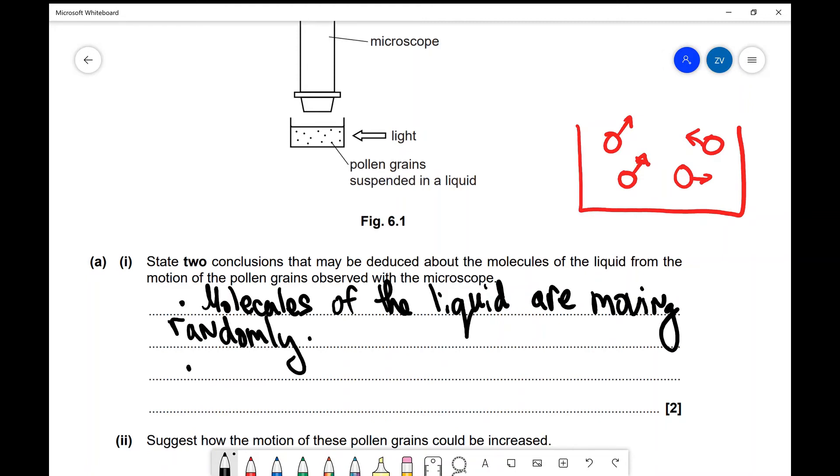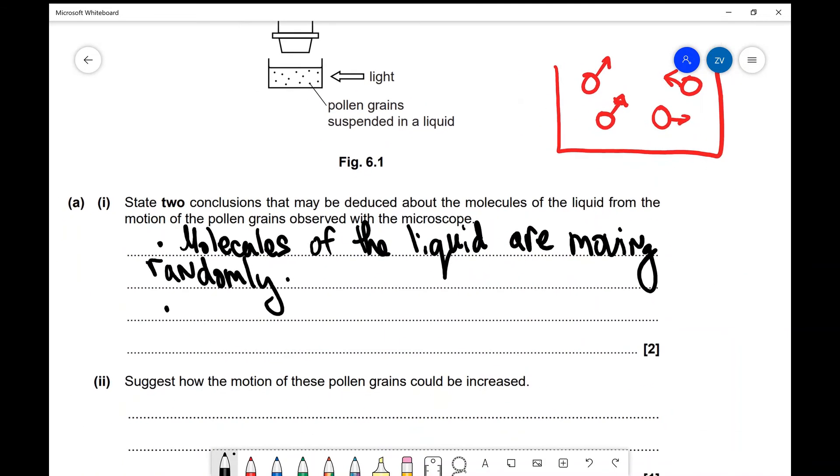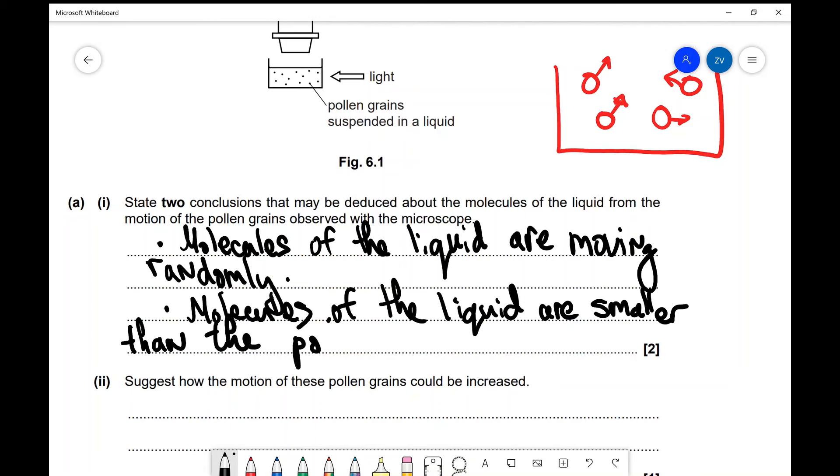Additionally, we also know that we cannot see the liquid molecules, we can only see the pollen grain particles. Well, if that's the case, that means that the molecules of the liquid must be a lot smaller than the pollen grains. Okay, so let's just write that. So the molecules of the liquid are smaller than the pollen grains.